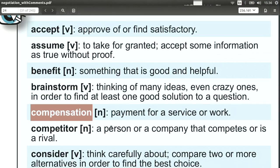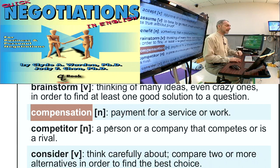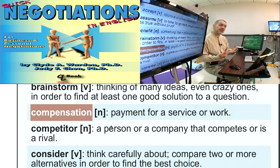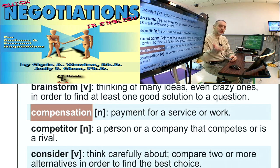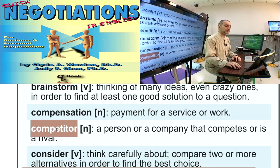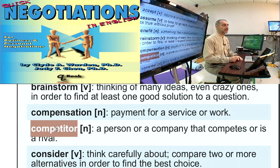'Compensation' is payment for something that has been done, some work that is completed. It's a bit like benefit, only more specific: you do A and I give you B. For example, you wash my car and I pay you ten US dollars. In negotiation, we can use it more broadly: if you can give me faster shipping time, I can compensate you later by giving you a different benefit. Compensation can be one-to-one, or more general — you do something good for me and I'll compensate you.